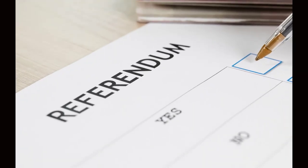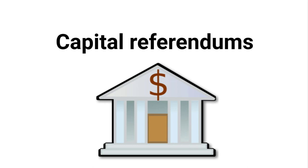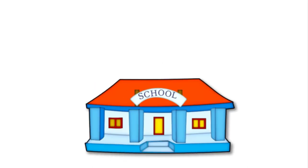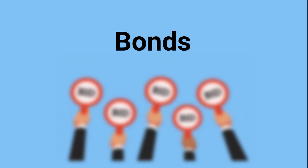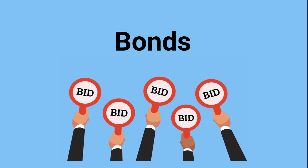Referendums allow citizens to have a direct say in a decision to increase taxes for particular projects or expenses. Referendums for capital projects are similar to homeowners asking for a loan or a mortgage. The money is typically used for construction of new buildings, additions, and renovations or maintenance of existing facilities. Instead of going to a bank to ask for a loan, school districts issue general obligation bonds on the open market and investors bid on them. The school district gets cash in the short term and agrees to pay back the principal and interest over a fixed period of time using property taxes.